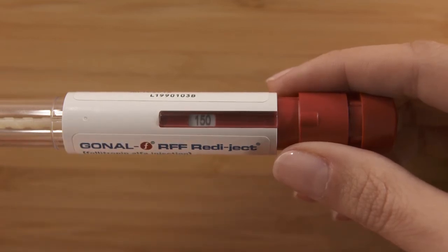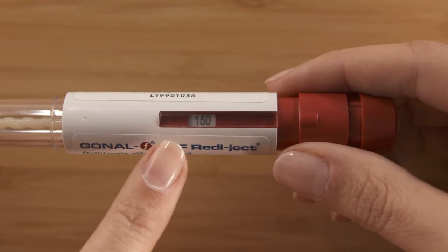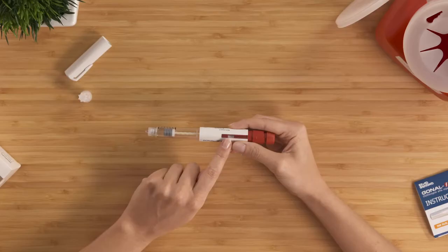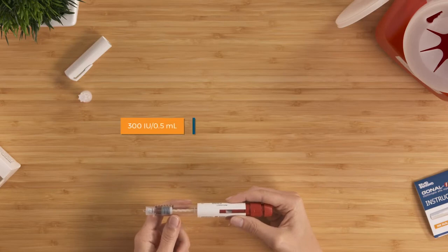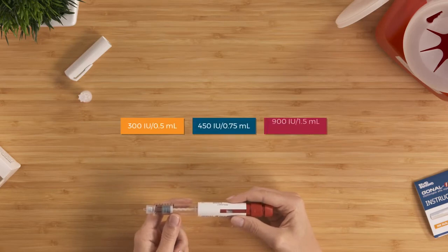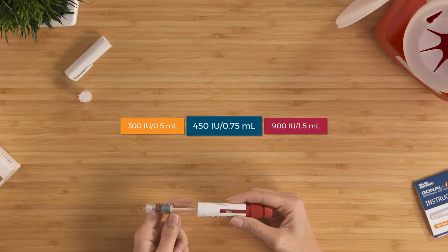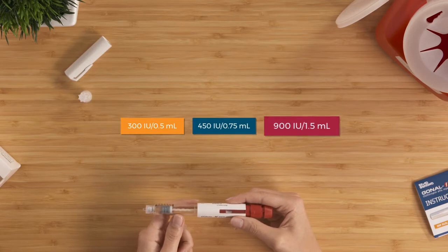For example, if your intended dose is 150 IU, confirm that the dose information display reads 150, like so. IU is short for International Units of Medicine. The pen comes in three different IU amounts: 300 IU, 450 IU, and 900 IU.